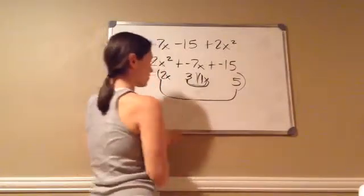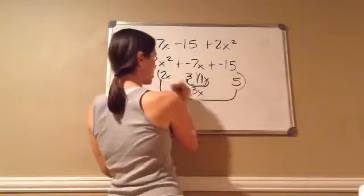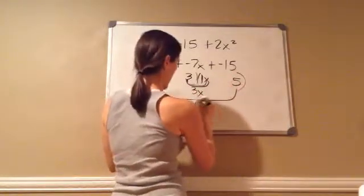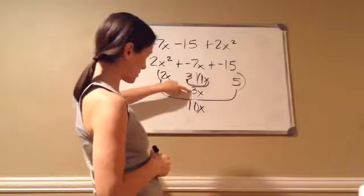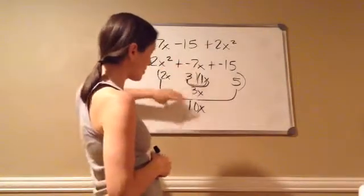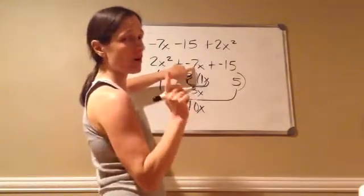Using the inner and outer method, 3 times 1x is 3x, and 2x times 5 is 10x. Now, can I add 10 plus 3, get 13? That doesn't work. But, 10 minus 3 equals 7. That means we're on to something.